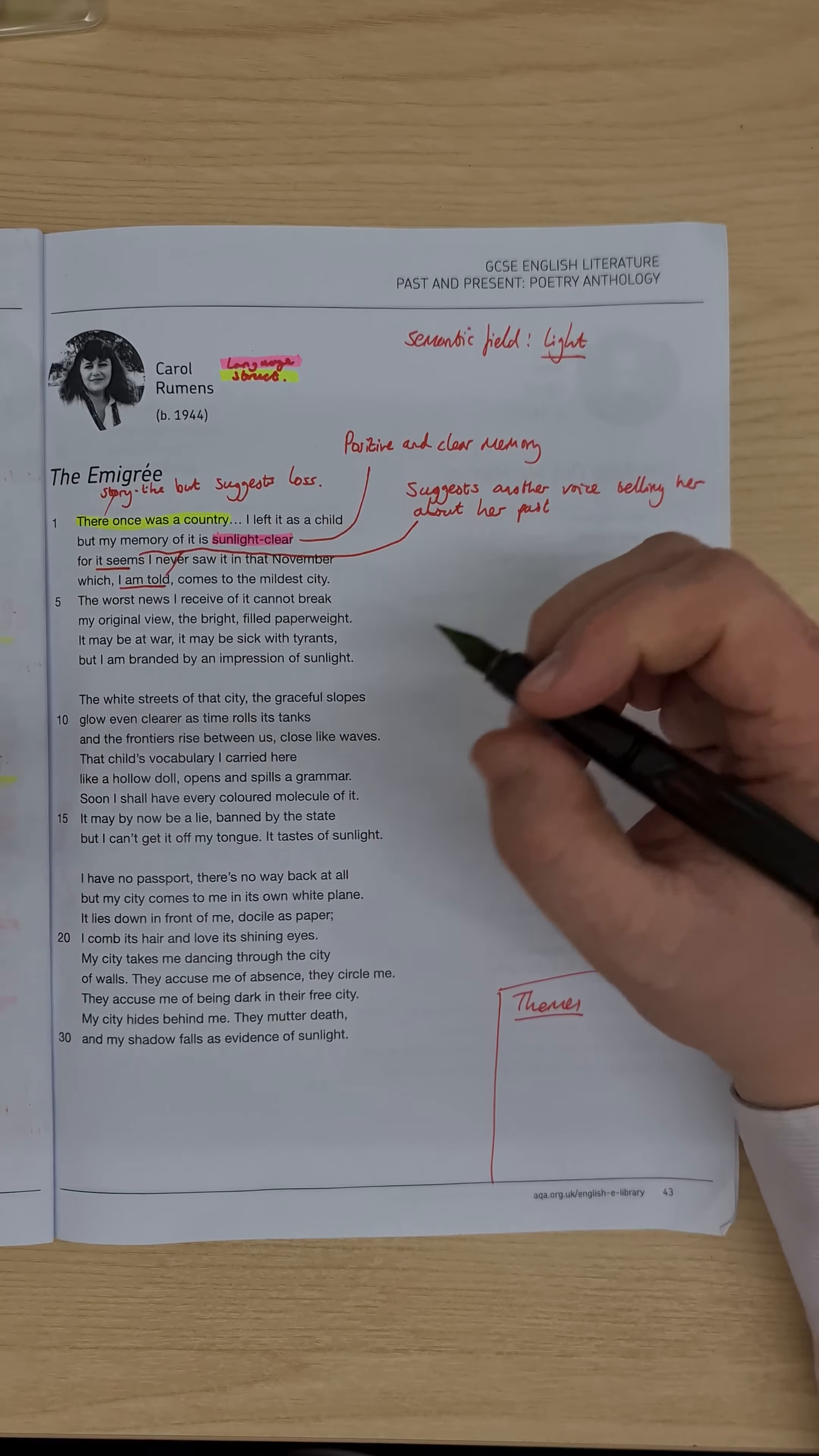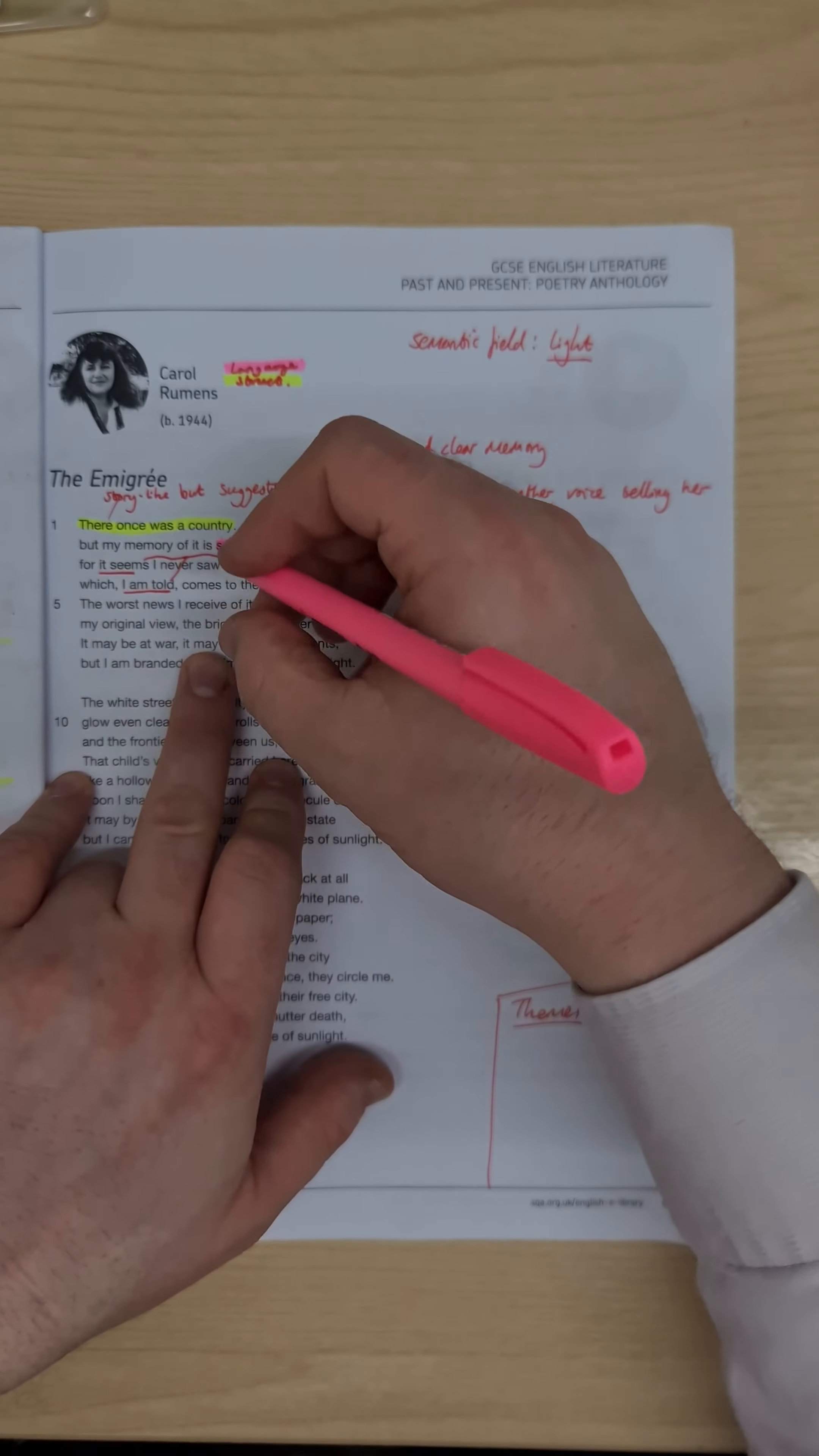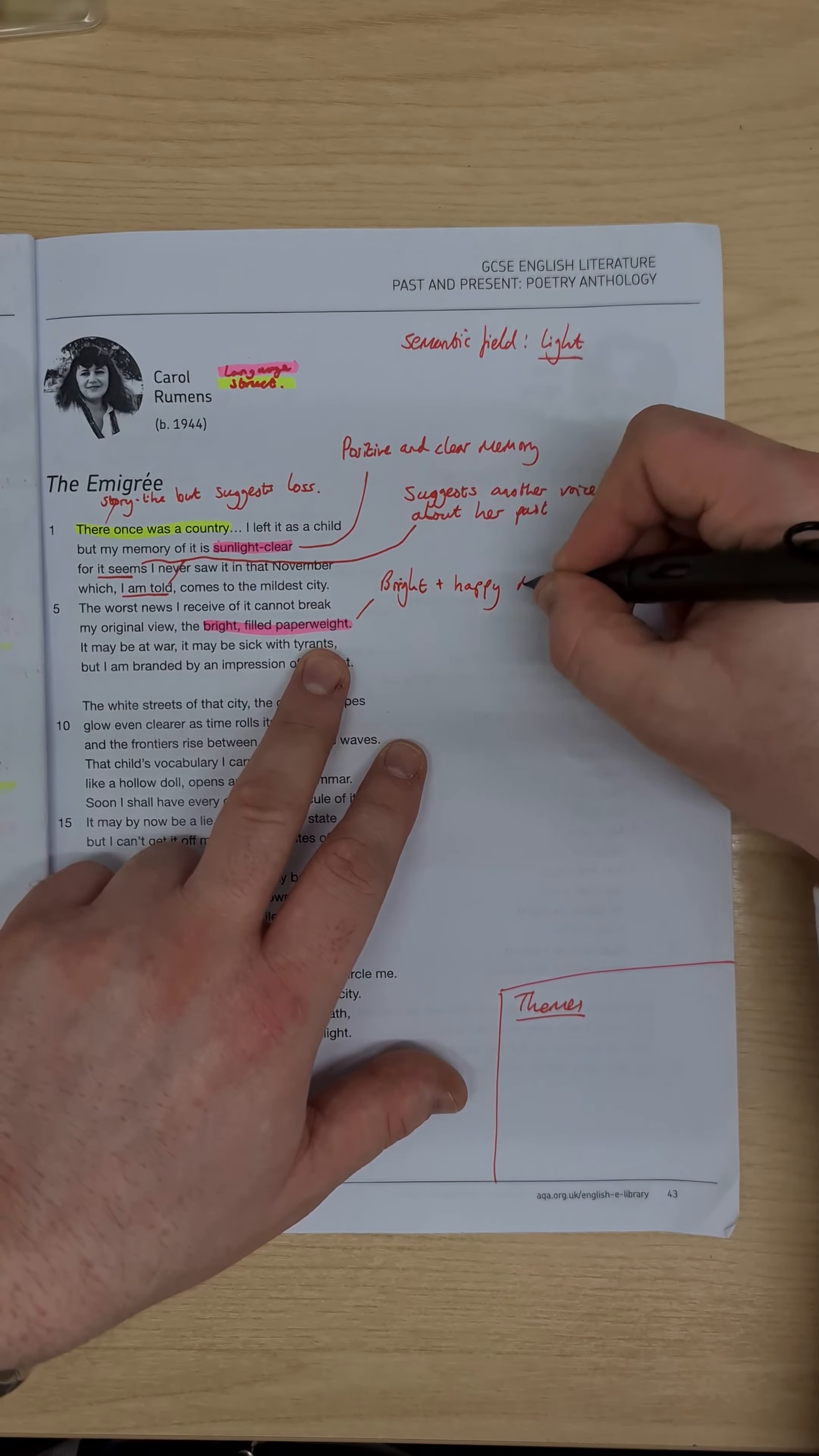So it comes to the mildest city, the worst news I receive of it cannot break my original view, the bright-filled paperweight. And here we have a lovely metaphor talking about that bright-filled paperweight, suggesting that there are bright and happy memories. Notice that when we're thinking about the memories so far, we've had positive and clear memories. Now we're having bright and happy memories.